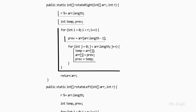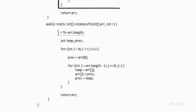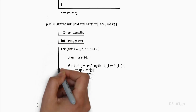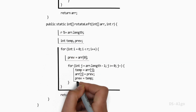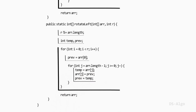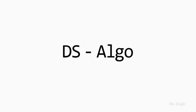Now let's look at the implementation for left rotation. This speeds up rotation if rotation count is greater than or equal to the array length. The temporary variables are used for shifting elements. The outer for loop iterates for the given rotation count, initializing prev with the first element. The inner for loop shifts the array elements towards the left direction using temporary variables. I hope you understand the logic behind this algorithm. Thank you for watching.